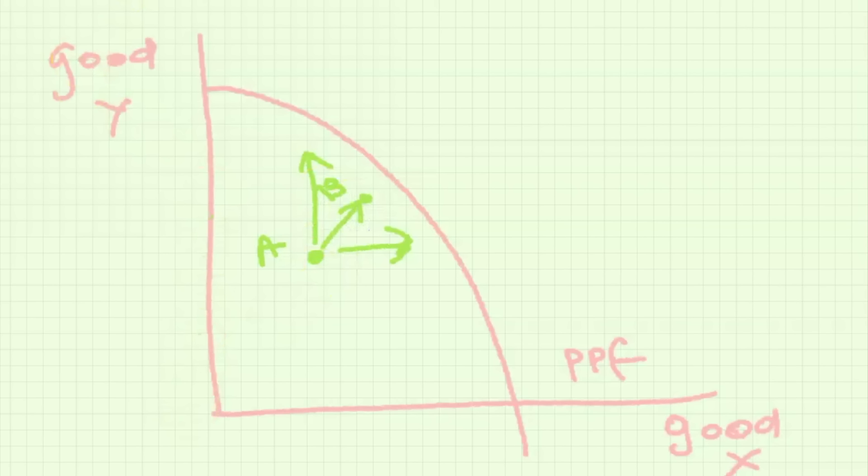We see that area A is inefficient because I could produce more of good x or good y without forsaking the other good and so I'm losing. A movement from point A to point B would be an increase in actual growth whereas a shift of the PPC curve outward would be an increase in potential growth as a result of like new technology or innovation.